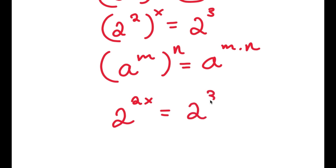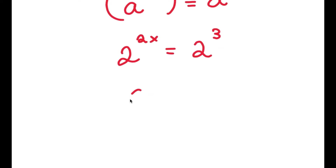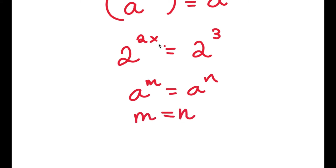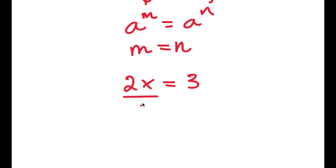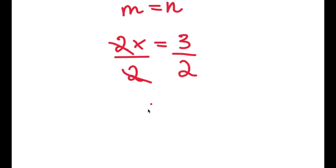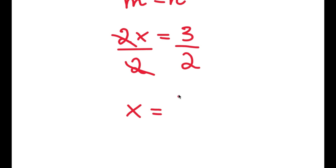Now this gives 2 to the power of 2x is equal to 2 to the power of 3. Since the bases are equal, the exponents must be equal, so 2x equals 3. Dividing both sides by 2, I get x is equal to 3 over 2.